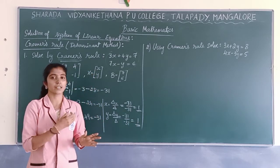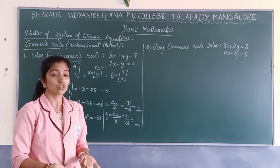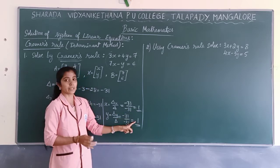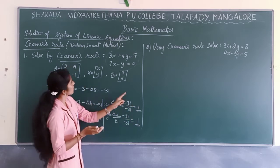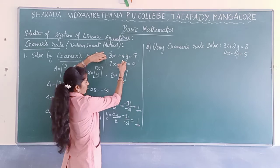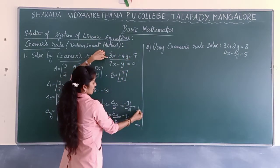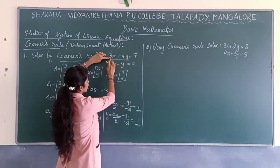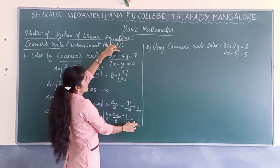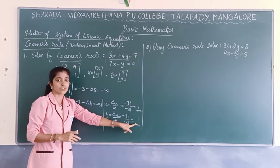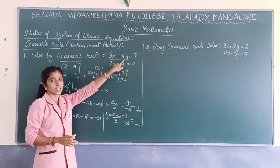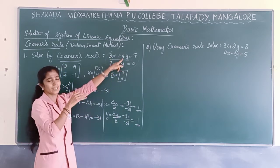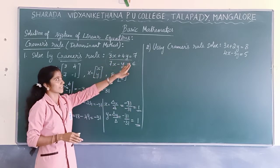Now we should verify the answer — we may not be certain it is correct. Substitute x=1 and y=1 into the first equation: 3×1 + 4×1 = 3 + 4 = 7, which matches the RHS. So the answer is correct. Always verify by substituting back. This is a compulsory 2-mark question, so always verify once.